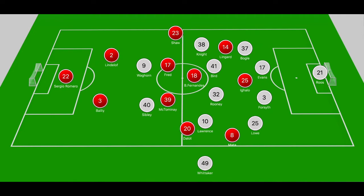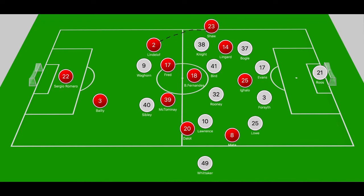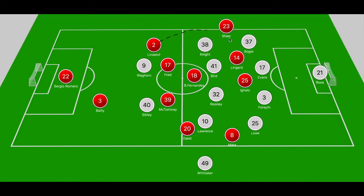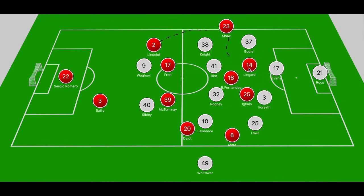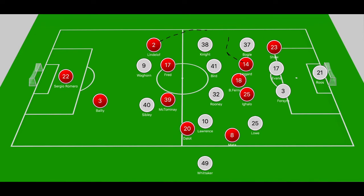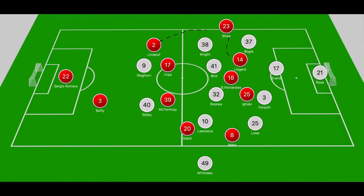Breaking down the build-up to United's opening goal, we see similar themes. Lindelof broke forward towards halfway without being pressed and slid the ball across Knight into Luke Shaw's path on the overlap. Shaw pushed forward and squared the ball across Bogle and Knight for Lingard running off Bird. Lingard had two shots blocked, Bruno Fernandes picked up the loose ball and fired an effort off Forsyth, which fell to Luke Shaw in left half-space — and he beat the keeper to put United ahead.